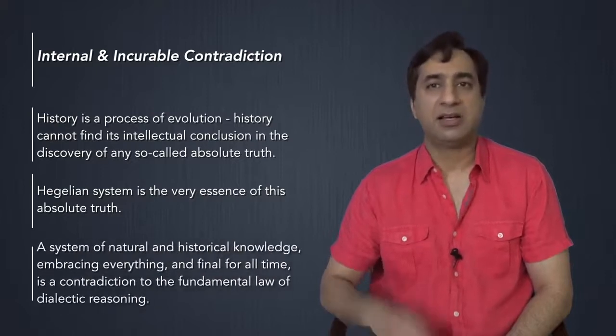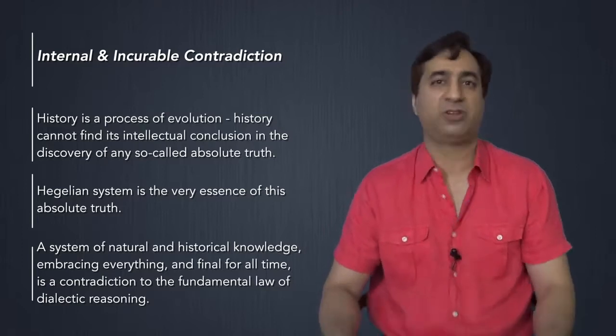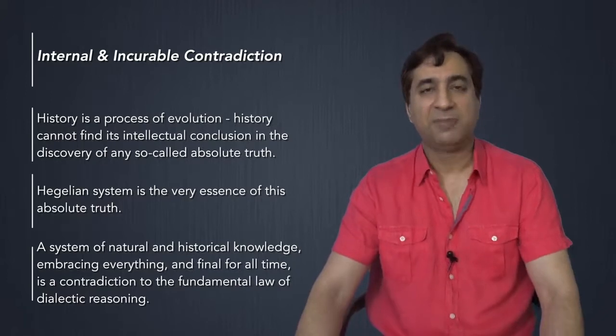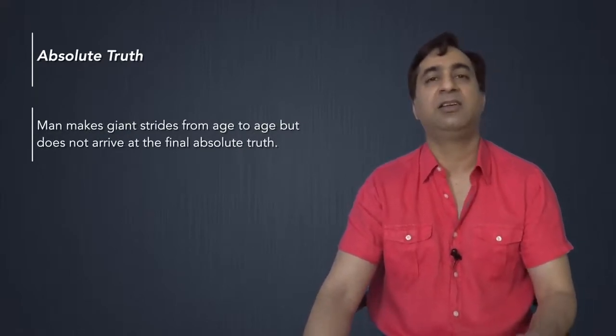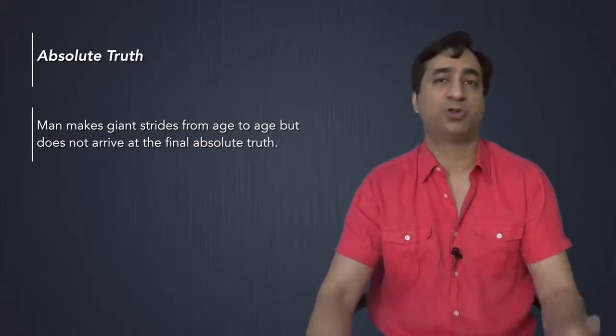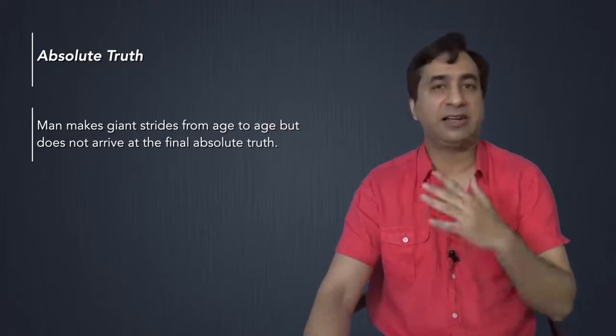But Engels says, a system of natural and historical knowledge, embracing everything and final for all time, is a contradiction to the fundamental law of dialectical reasoning. Because the fundamental law of dialectical reasoning is that everything changes. So can there be an absolute truth? Of course, man makes giant strides from age to age, but does not arrive at the final absolute truth. Man cannot arrive at the final absolute truth. Because the journey towards this absolute truth is infinite. It can never end.